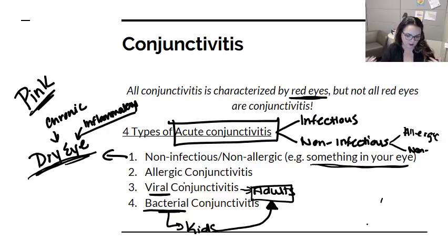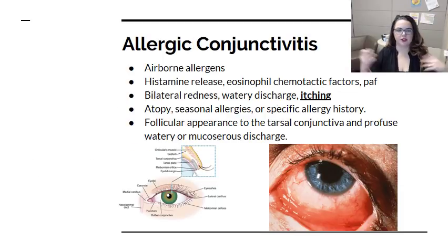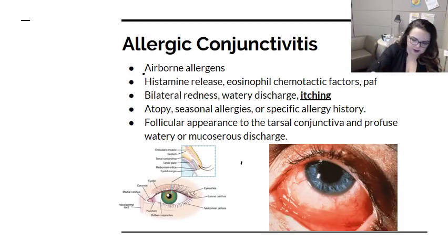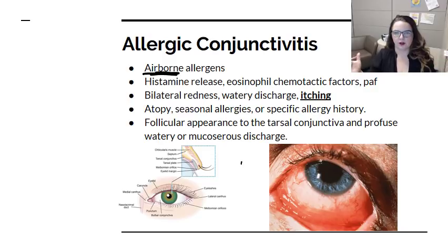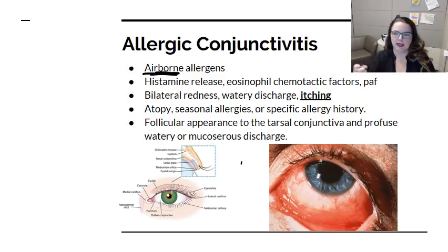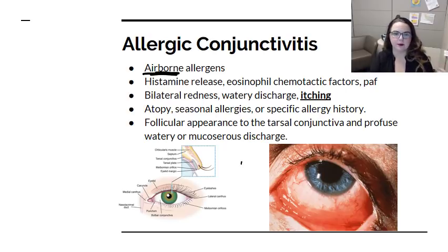Now on to allergic conjunctivitis. Typically this is caused by airborne allergens. Right now it's spring in Chicago — there's a lot of pollen, tree pollen, and ragweed in the air, all things that people have airborne allergies to. The allergens contact the eye and you have a normal type one hypersensitivity response. If I'm allergic to tree pollen, I probably already have some IgE bound to a mast cell that, when it crosslinks on that mast cell, leads to degranulation.